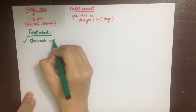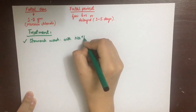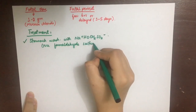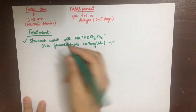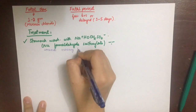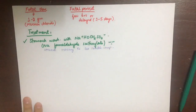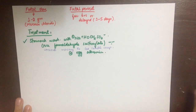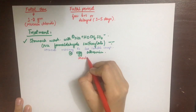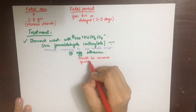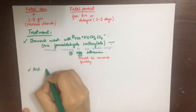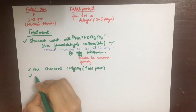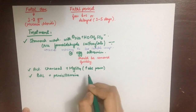Treatment of acute mercury poisoning includes stomach wash with sodium formaldehyde sulfoxylate, which converts mercury to a less soluble mercurous compound. Egg albumin can also be used, forming an insoluble albuminate of mercury, which should be quickly removed by emesis or gastric lavage to prevent absorption. Activated charcoal and magnesium sulfate should be given to absorb the poison; magnesium sulfate increases absorptive power.